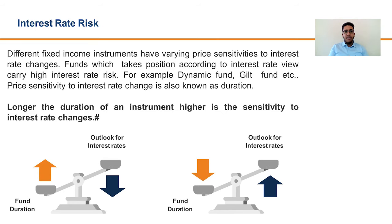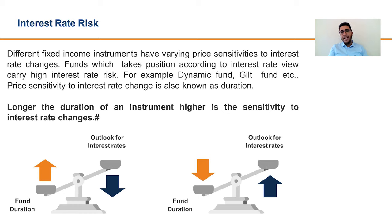That is how interest rate movements impact the price of the securities and ultimately your investment portfolio. The impact also depends upon the duration of the fund — higher the duration of the fund, higher the impact, and lower the duration of the fund, lower would be the impact. Duration is nothing but the average maturity of the portfolio, indicating when all the instruments invested in that debt fund are maturing. By managing the duration of the portfolio, the interest rate volatility is generally managed.